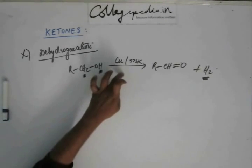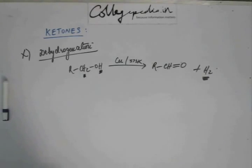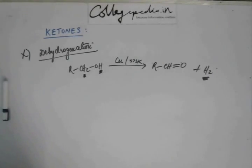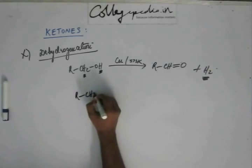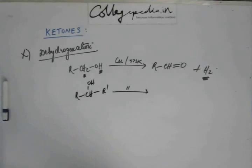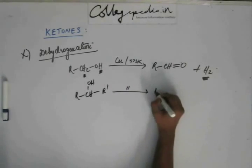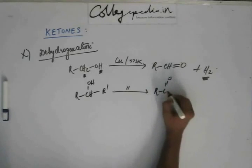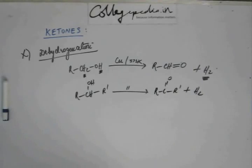When you take a copper tube heated at around 300°C and you pass vapors of 1° alcohol, the result is an aldehyde. If you take 2° alcohol and you pass the vapor through a copper tube heated at 300°C, again dehydrogenation will occur, and you will get a ketone instead of an aldehyde.